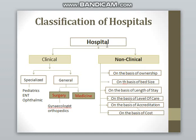Now coming to classification. Broadly, hospitals are classified into two types: clinical and non-clinical. The clinical part is divided into specialized and general functions. Specialized departments include pediatrics, ENT, and ophthalmic, while general departments include surgery and medicine. Non-clinical hospitals are divided into six categories based on ownership, bed size, length of patient stay, level of care needed, accreditation, and hospital costs.